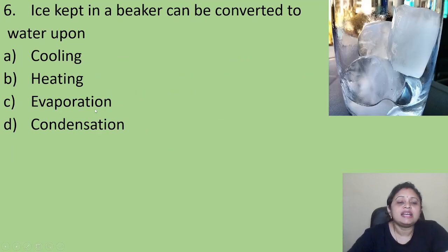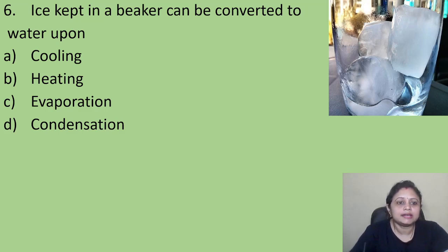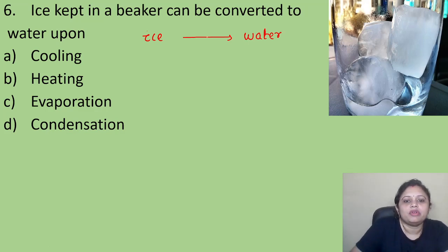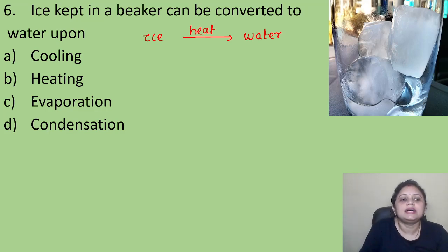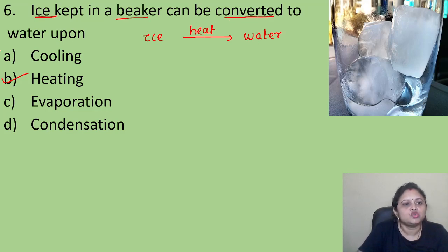Coming to the next question: ice kept in a beaker can be converted to water by — Option A: cooling. Option B: heating. Option C: evaporation. Option D: condensation. We know that ice can be converted into water when we heat it. So the correct answer is Option B, that is heating. By heating, the ice kept in a beaker can be converted into water.